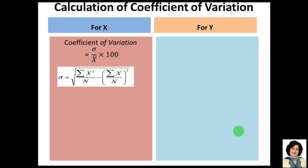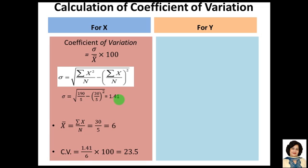For X, the coefficient of variation is 1.41 upon 6 into 100, so this is 23.5.